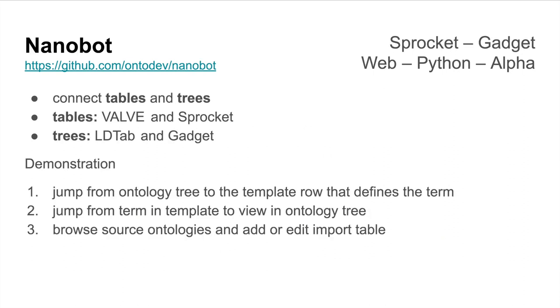Nanobot is our tool that connects together all these things — it connects together the tables and trees, tables with the Valve validator and Sprocket web interface, LDtab with OWL in SQL, and the web interface for that with Gadget.